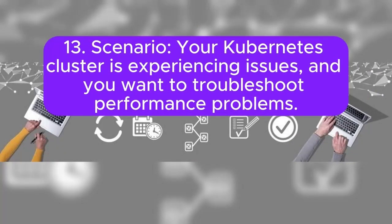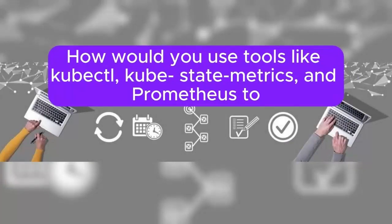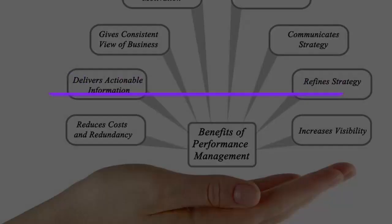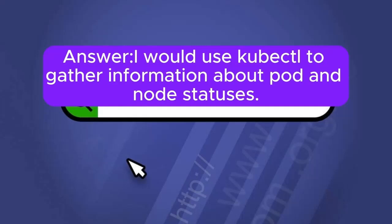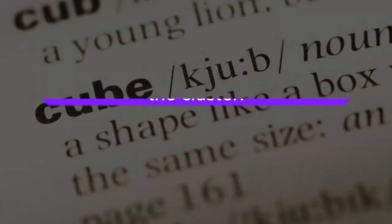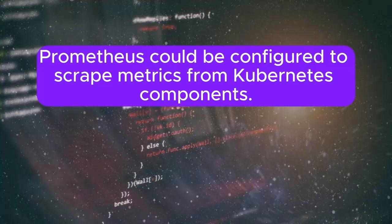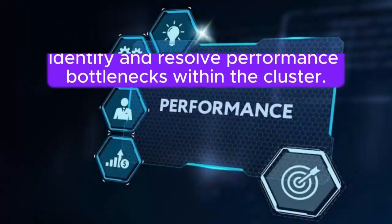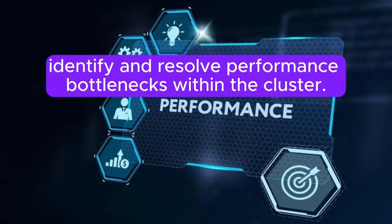Scenario 13: Your Kubernetes cluster is experiencing issues and you want to troubleshoot performance problems. How would you use tools like kubectl, Kube State Metrics, and Prometheus to identify and resolve performance bottlenecks within the cluster? Answer: I will use kubectl to gather information about pod and node statuses. Kube State Metrics would provide additional insights into the state of the cluster. Prometheus could be configured to scrape metrics from Kubernetes components. Analyzing these metrics and using visualization tools like Grafana would help identify and resolve performance bottlenecks.